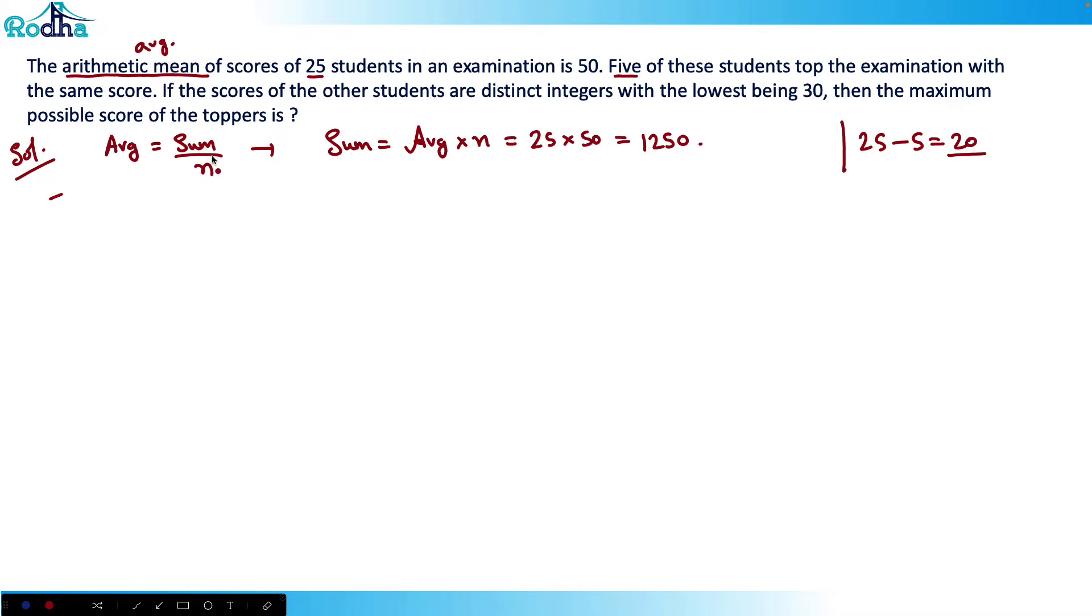So their scores will be 30, 31, 32, and that will go on to 49. These are scores of 20 people. But I can also say that the score of five toppers here can all be y, y, y, y. So all can be equal right? All are equal actually because they topped with the same score.